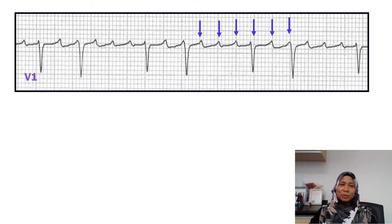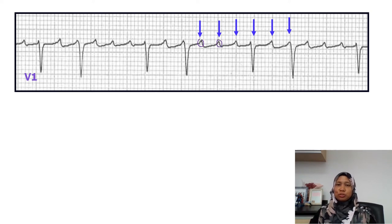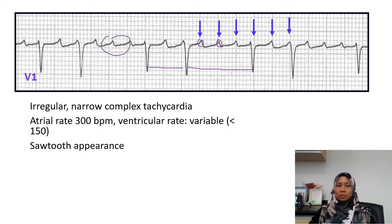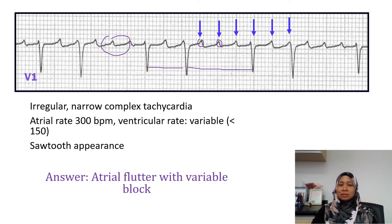The next strip shows an irregular rhythm because the RR intervals are not the same. The atrial rate from here to here is about 300 beats per minute, while the ventricular rate is less than 150 beats per minute. It is an irregular narrow complex tachycardia, and if you remember there is a sawtooth appearance here — so this is actually an atrial flutter, however it is irregular because there is variable block at the AV node. So this is atrial flutter with variable block.